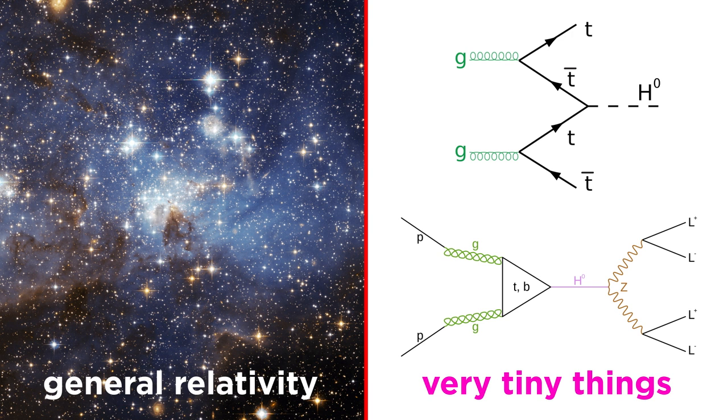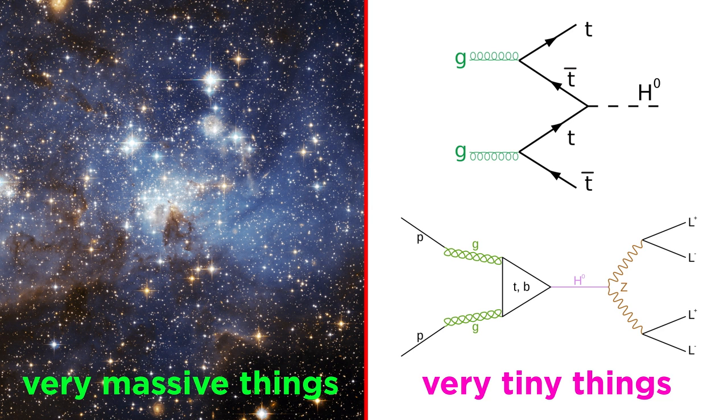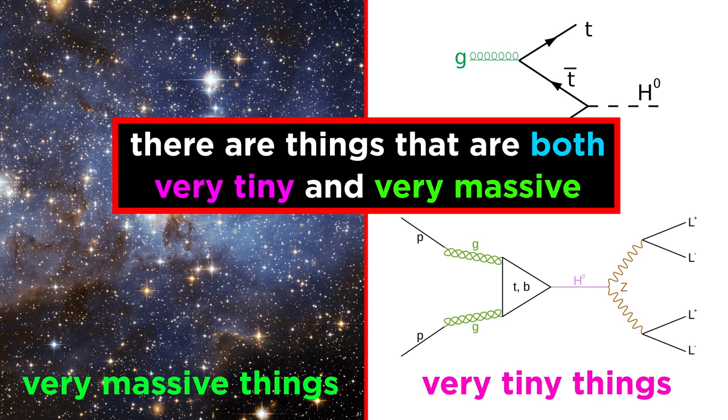If things are very tiny, they are quanta, and we use quantum theory. If things are very big and massive, they warp space-time, and we use relativity. But there are certain situations in physics where we need to talk about things that are both very tiny and very massive.